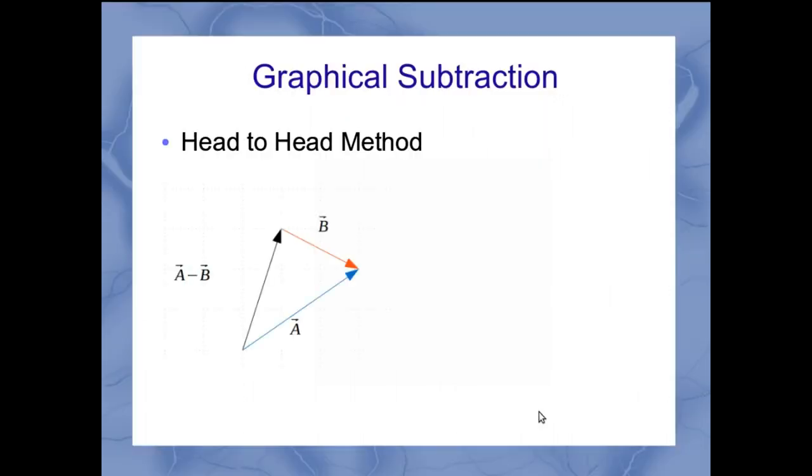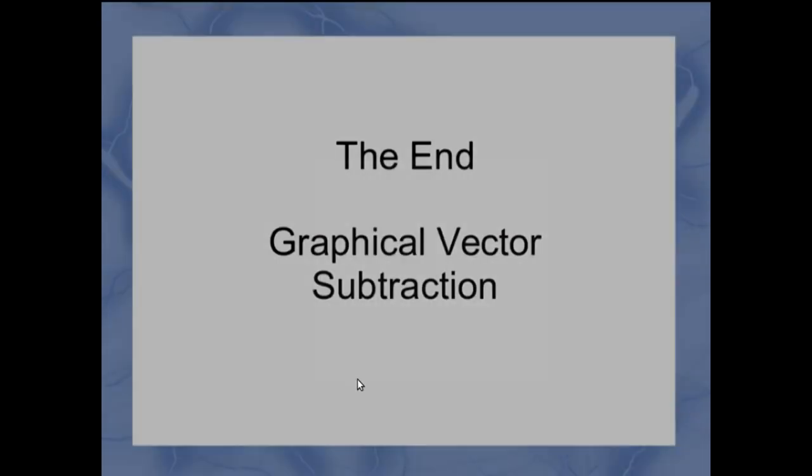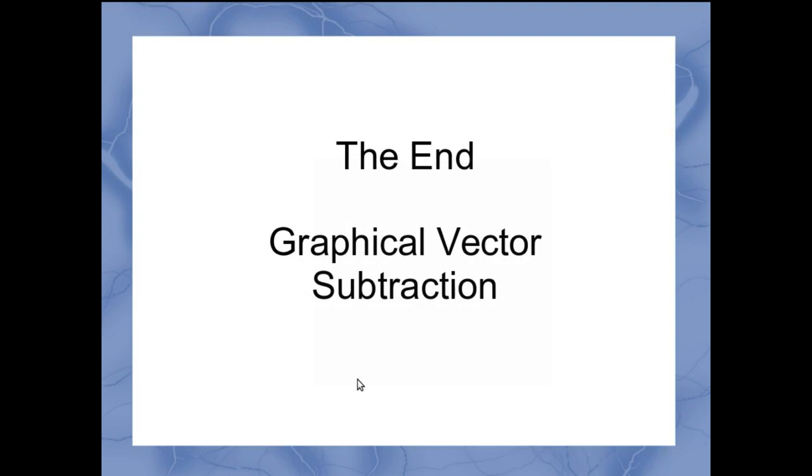So again, reviewing, if I do the head to head method, I line my a and b vectors up and go from the tip of a to the tip of b, and that gives me a minus b. And if I want to do b minus a, I line my two vectors up exactly the same, but have my arrow going the other direction. So that gives you two different ways to think about graphical vector subtraction. And you can see how they relate closely to graphical vector addition.